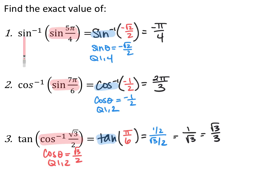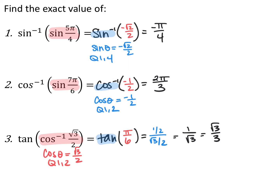You have to evaluate from the inside out. My final answer will be an angle measurement because sine inverse is on the outside. I take the sine of five pi over four and get negative root two over two. Then I find what angle gives sine equal to negative root two over two in quadrants one or four. That's in the fourth quadrant, so we label it as a small negative angle: negative pi over four.